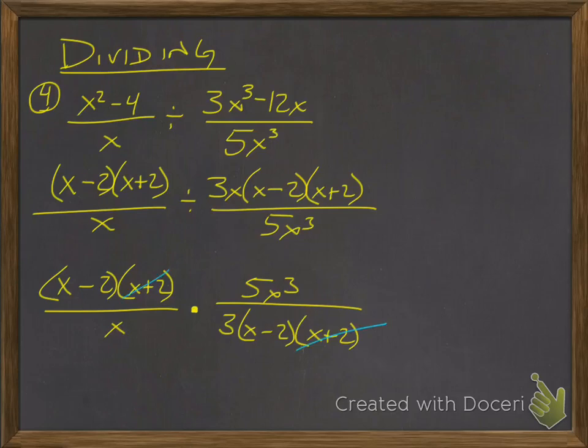Cross out your like binomials on top and bottom, x plus two, x minus two. And I have an x here, and this is x to the third. So what happens is that I have x times x times x there. It's not going to be x to the third anymore. I'm canceling out with one, so it's going to become x squared. So I'm left with five x squared in my numerator, and the only thing in my denominator is three.